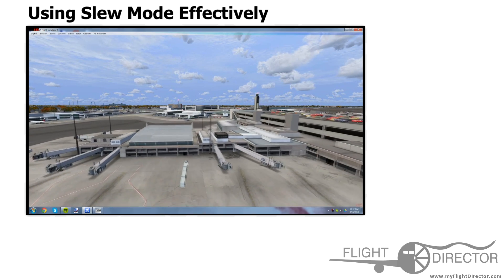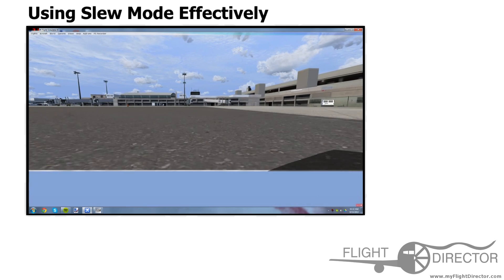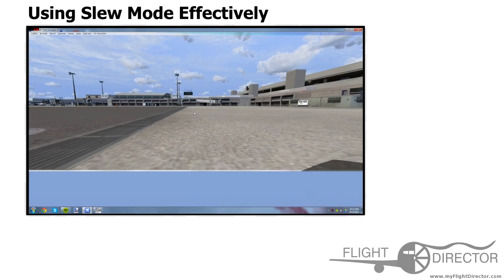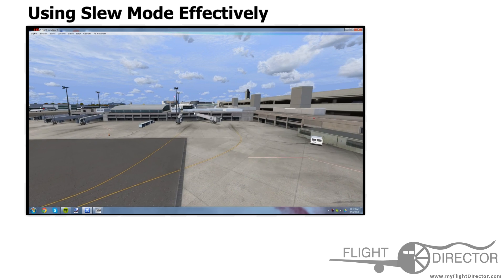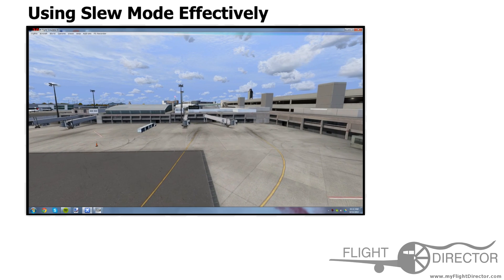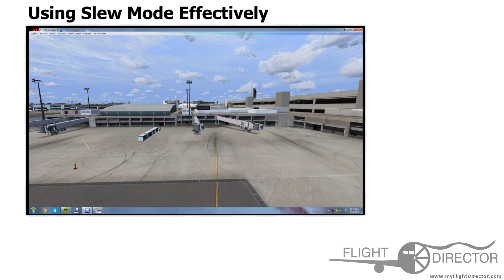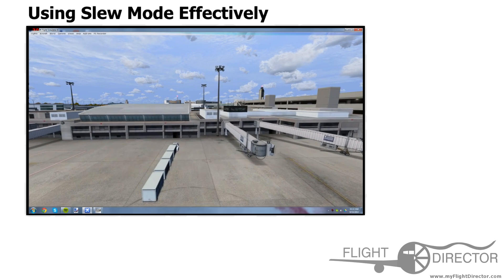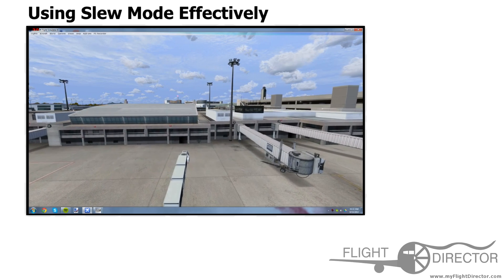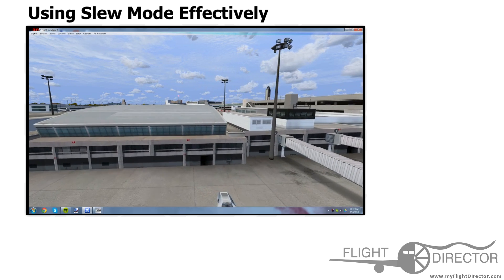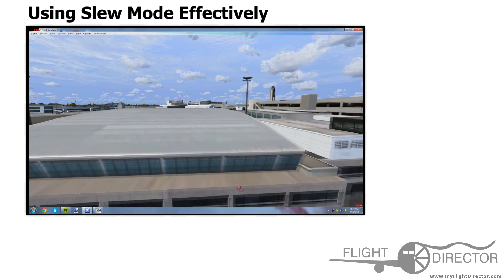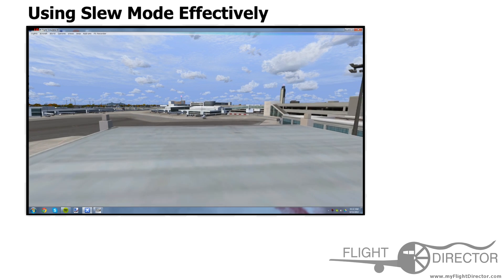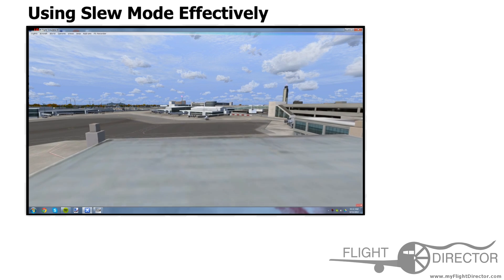Then you can move around very easily and your view is not obstructed at all. This creates very simple views that you can easily look around the airport. Like this would be a great shot for a video, for example — and it's all in SLU Mode. All right guys, that's it for today. I hope you learned something. For Flight Director, this has been Spencer — have a good day.